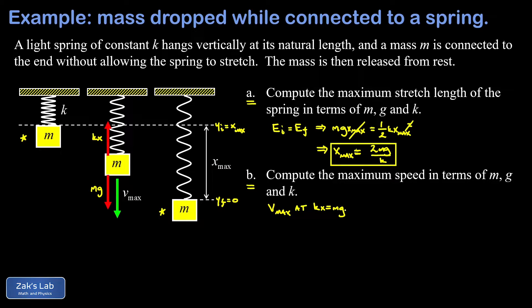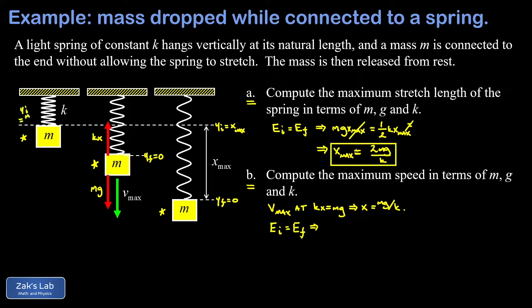After that moment, KX is greater than MG and the mass moves slower and slower. So the stretch length of interest is where KX equals MG, giving X equals MG over K at the location of maximum speed. Now we apply energy conservation again using the same initial state but with the final state at this special moment where KX equals MG. I'll again call the Y coordinate zero at the lowest point in the problem — the point of maximum speed — making the initial Y value MG over K.